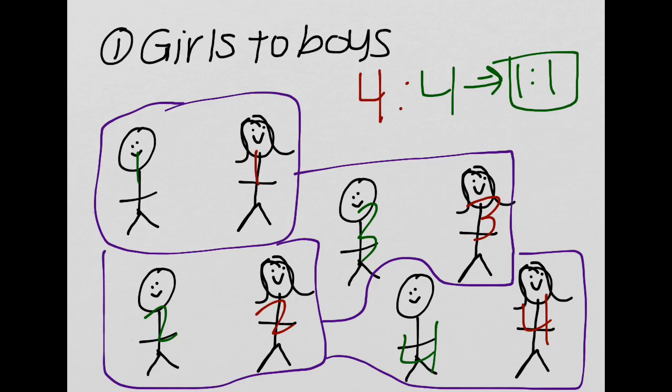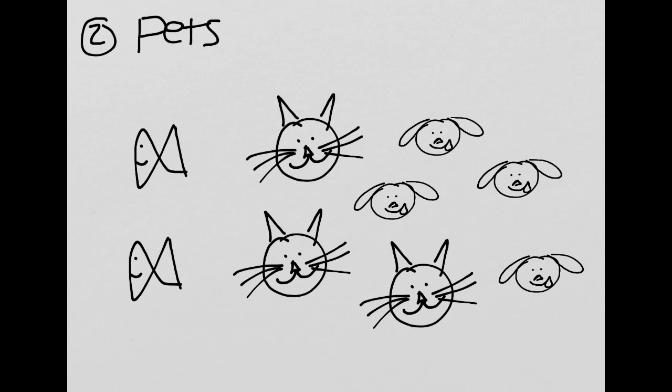Now let's take a look at the next example: pets. You might do this in your class where you see the ratio of pets. In this one, I want us to find the ratio of fish to cats to dogs.